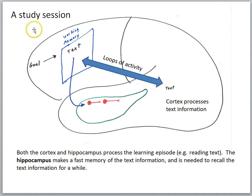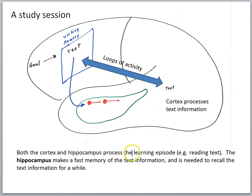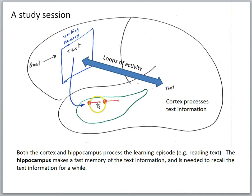If we think about just a study session — say we're reading a text — the text will be in our working memory. In previous lessons we learned this will involve loops of neural activity with the relevant perceptual regions of the brain processing the text. But the contents of working memory will also make changes in the hippocampus. Both the cortex and the hippocampus process the learning episode. The hippocampus makes a fast memory of the text information and is needed to recall it for a while. The synaptic plasticity happening in the cortex is not sufficient to establish a strong long-term memory with just one episode, whereas the hippocampus is making synaptic changes — strengthening certain synapses — and that's an important component of early learning.